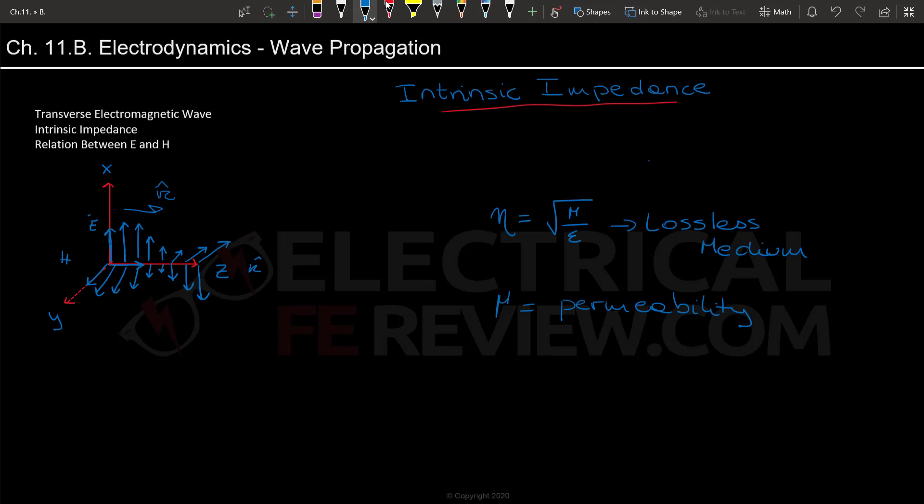we can find the phase velocity, u of p, which will equal 1 over square root of mu epsilon. And then we can find the length of the wave by doing the phase velocity over the frequency. So these three equations are very important equations that you definitely want to remember when dealing with waves.